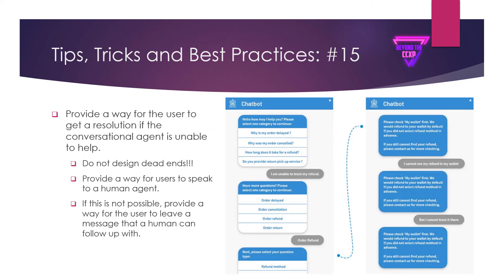Number fifteen: provide a way for the user to get a resolution if the conversational agent is unable to help — do not design dead ends. In the example shown, everything looks fine and then the bot gets stuck, spinning in a loop. You've got to provide a way for users to speak to a human agent. When the bot does its orientation at the beginning, it needs to list out how that can happen — for example, type zero to speak to a human. If that's not possible, provide a way for the user to leave a message for follow-up.